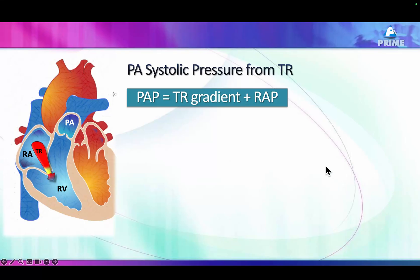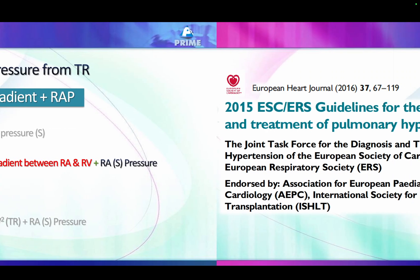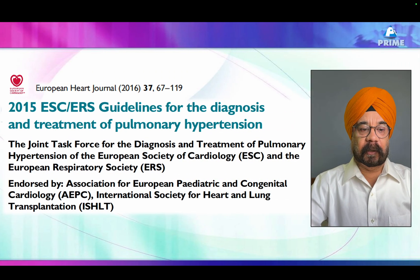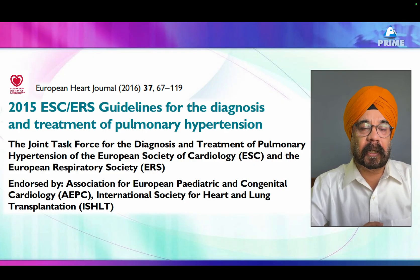We've been doing great by saying PA pressure is equal to TR gradient plus right atrial pressure, and we've been mentioning it throughout echo reports. But that's not a right practice. We were very enthusiastic calculating the gradient across the tricuspid valve and adding RA pressure to tell pulmonary artery pressure easily — but then the guidelines came in 2016 and found erroneous problems, saying it's not a good idea to give an assessment of pulmonary artery pressure that way.